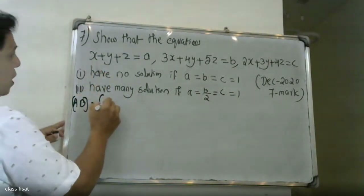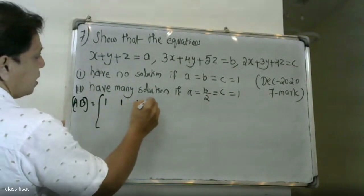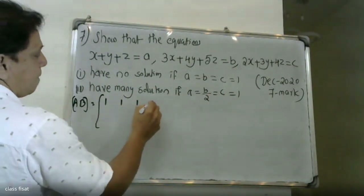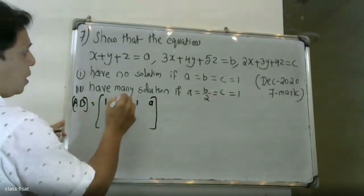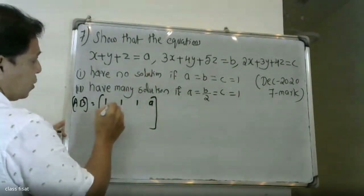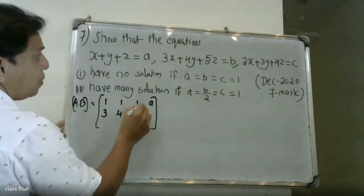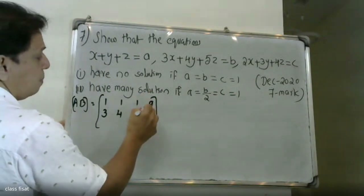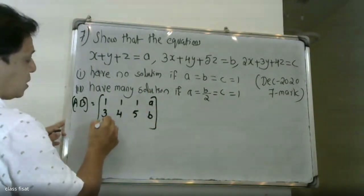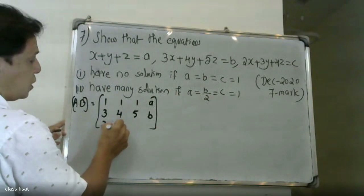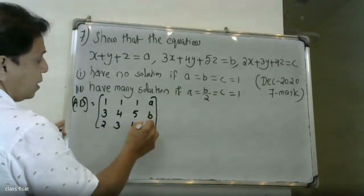The first row: x is equal to 1, y is equal to 1, then a. Next row: x is equal to 3, y is equal to 4, then b. Then x is equal to 2, y is equal to 3, z is equal to 4, then c.